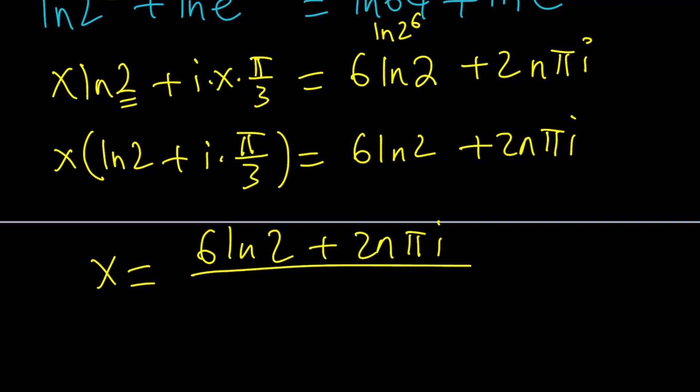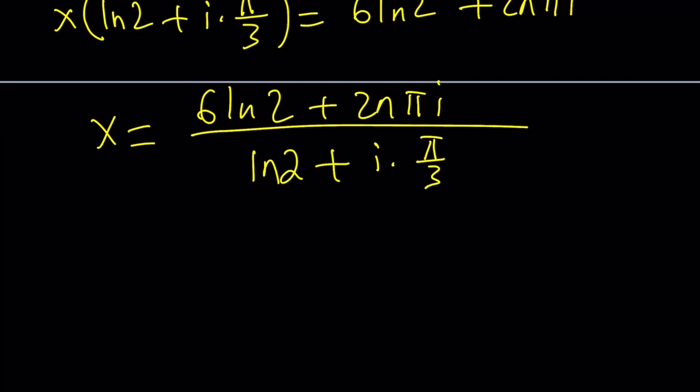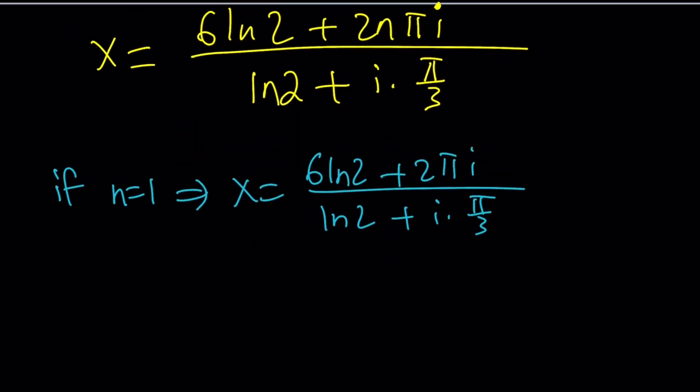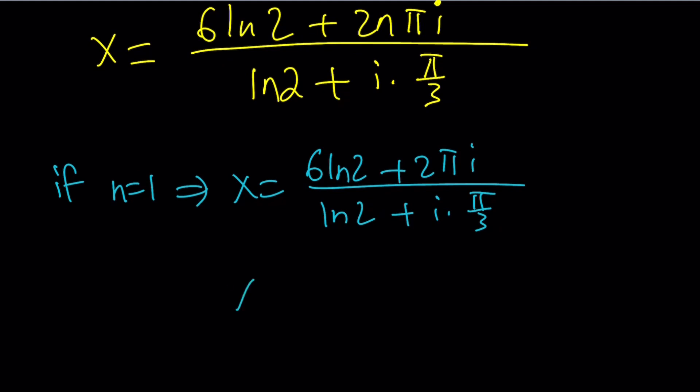Easy, right? Once you put it in polar form, then you'll get the answer. But one thing to keep in mind here is particular values like the principal branch. So, there are multiple solutions because this is multi-valued. So, you can basically replace n with certain values like n could be zero, n could be one. In this case, n equals one is an interesting one. So, let's go ahead and look at that first. If n is equal to one, then we get x equals six ln two plus two pi i divided by ln two plus i times pi over three. I don't like that fraction at the bottom. So, let's go ahead and multiply the top and the bottom by three to get rid of the fraction. That's going to give me 18 ln two plus six pi i divided by three ln two plus i pi.